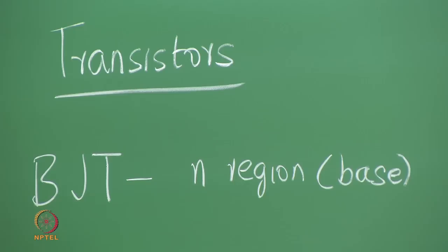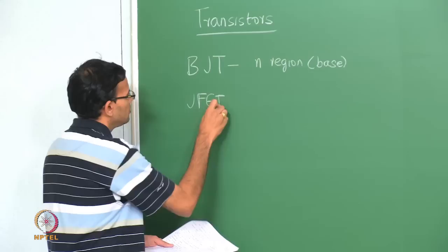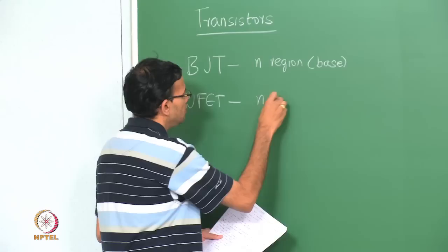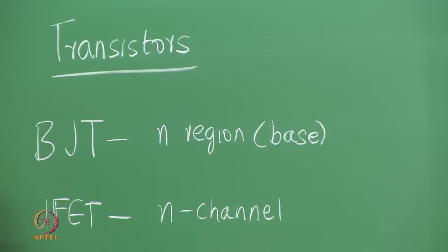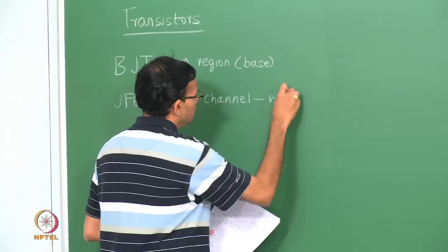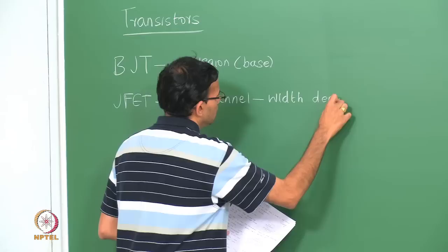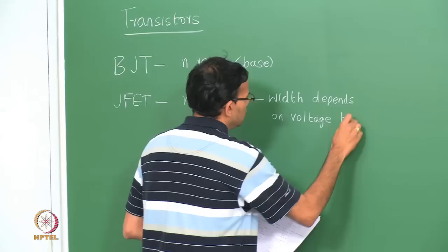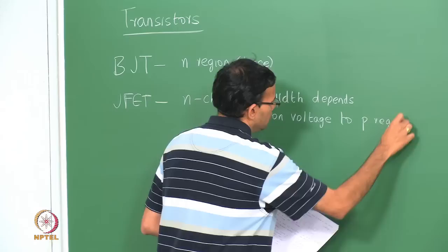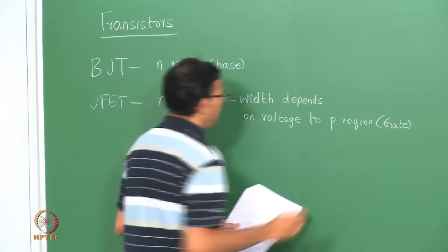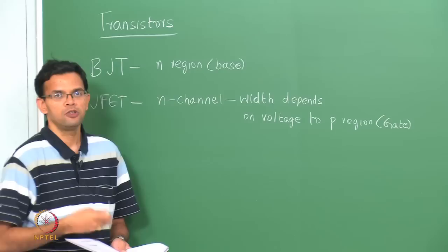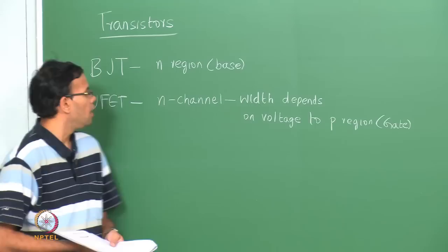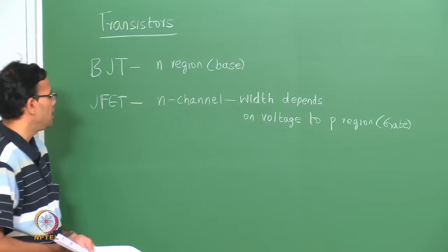After BJT, we looked at a junction field effect transistor, JFET. In the case of a JFET, we already had an N channel and the width of the channel was controlled by applying a voltage to the P regions, which essentially forms the gate. We had a source and a drain, and the current went from the source to the drain through the N channel. So a BJT is a current-controlled device and a JFET is a voltage-controlled device.